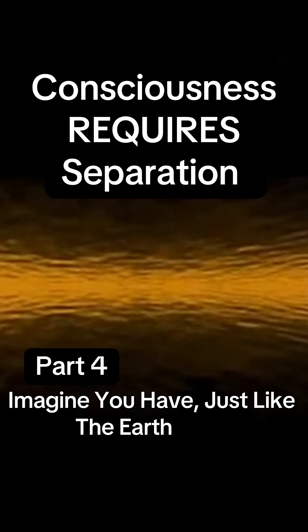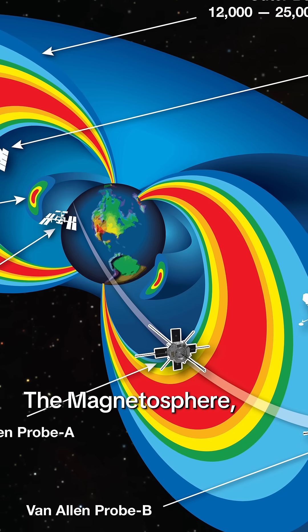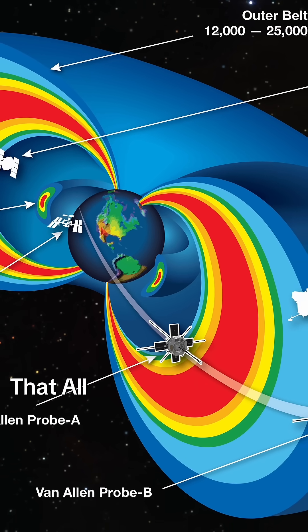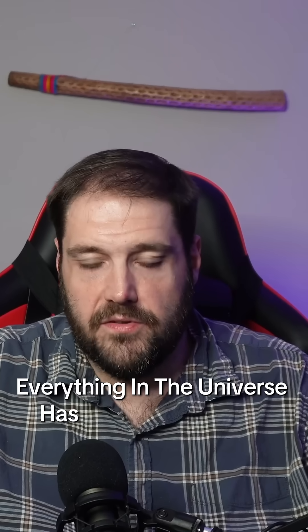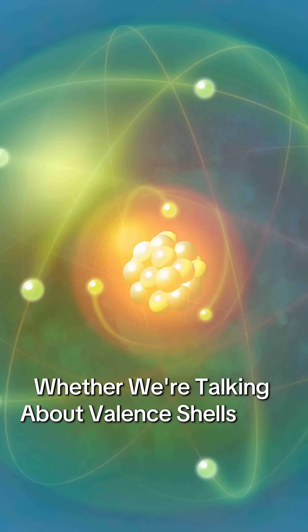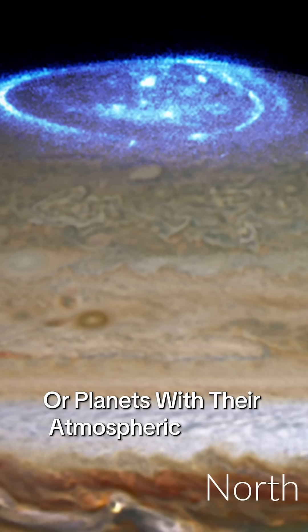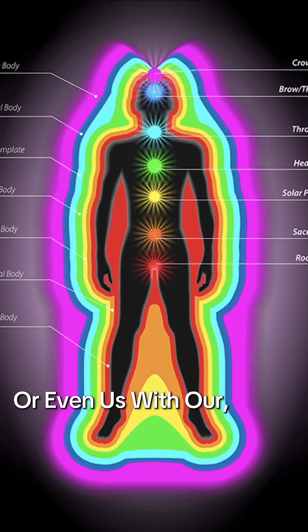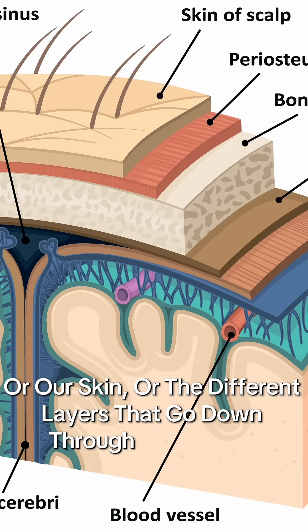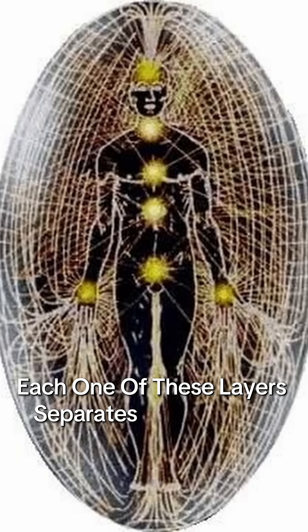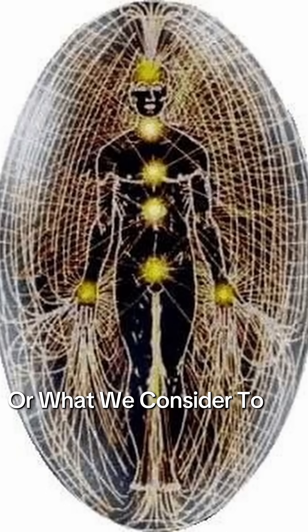Imagine you have the earth here, and you have a giant solar flare hurtling at it. The earth has its different atmospheric layers — which are actually plasma double layers: the magnetosphere, the ionosphere, etc. — that all absorb and reflect that solar flare as it comes towards us. Everything in the universe has this fundamental property, whether we're talking about valence shells in atoms, planets with their atmospheric layers, or even us with what we call an aura, our skin, or the different layers that go down through our bodies. Each one of these layers separates us from the outside world.